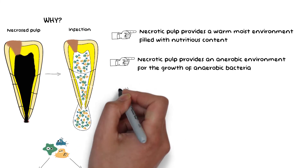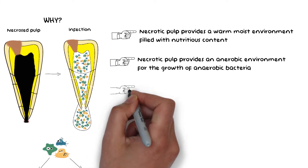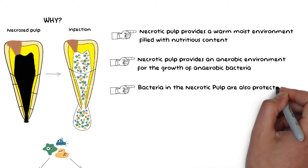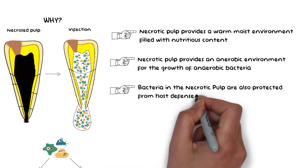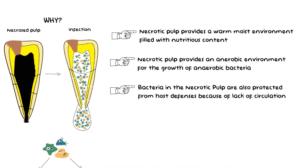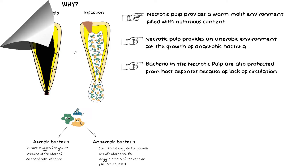Thirdly, the bacteria in the necrotic pulp are also protected from host defenses because of the lack of circulation in the already dead pulp. So, the bacteria are protected from host defenses and also have a good supply of nutrients, and hence they can easily establish an infection in the necrosed pulp.